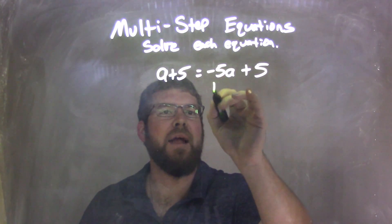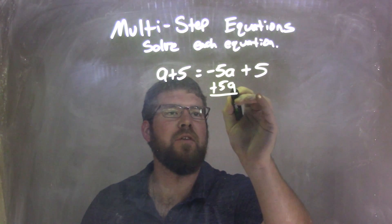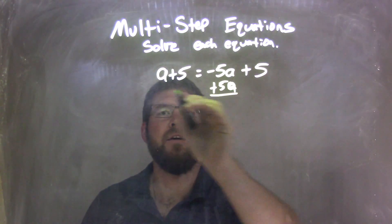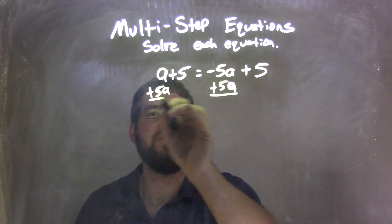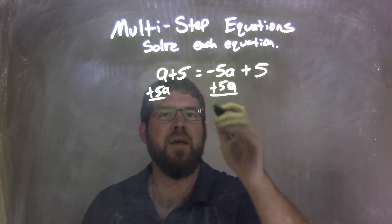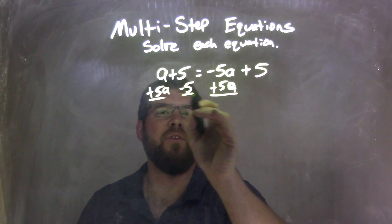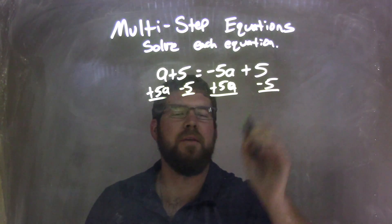So, I'm going to add 5A to its like terms, right? That's an A, plus 5A to both sides, because that's the opposite of that subtraction. I'm then going to subtract this 5 also to both sides, and that's one big step here.